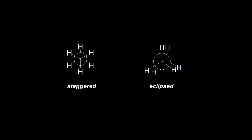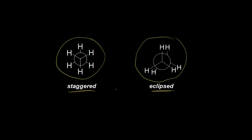We've just seen that the staggered conformation of ethane is more stable than the eclipsed conformation of ethane. If you want to turn a staggered conformation into an eclipsed conformation, you would need energy. At room temperature, there's enough energy for the staggered conformation to turn into the eclipsed. Equilibrium is reached between the two conformations, and at room temperature approximately 99% of ethane molecules have an approximately staggered conformation, whereas only about 1% have an eclipsed conformation. Again, that's due to stability — staggered is more stable than eclipsed.